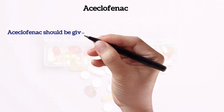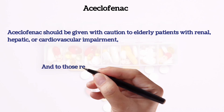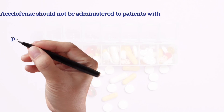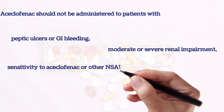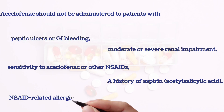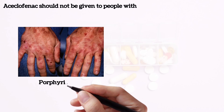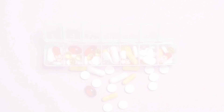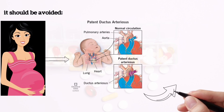Aceclofenac should be given with caution to elderly patients with renal, hepatic, or cardiovascular impairment, and to those receiving other medication. Aceclofenac should not be administered to patients with peptic ulcers or GI bleeding, moderate or severe renal impairment, sensitivity to aceclofenac or other NSAIDs, or a history of aspirin, acetylsalicylic acid, or NSAID-related allergic or anaphylactic reactions. Aceclofenac should not be given to people with porphyria or breastfeeding mothers, and it is not recommended for children. It should be avoided near-term in pregnant women because of the risk of premature closure of ductus arteriosus leading to fetal hydrops in the neonate.